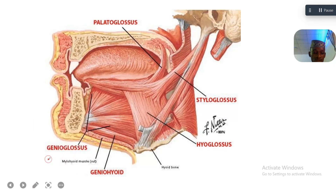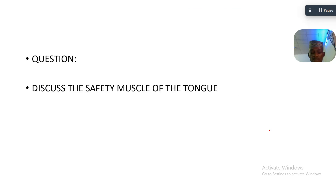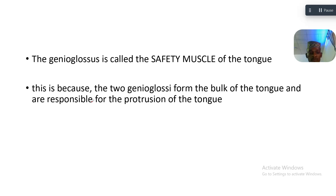In these pictures I would like us to note the genioglossus. In this next picture too, I would like you to note where the genioglossi are beneath the tongue. The genioglossus is called the safety muscle of the tongue.